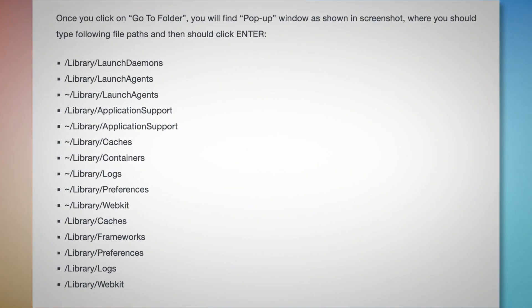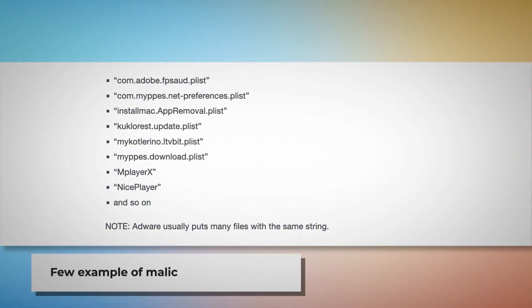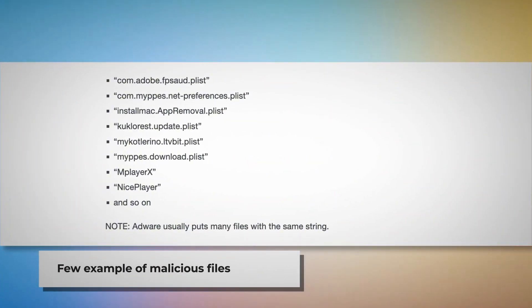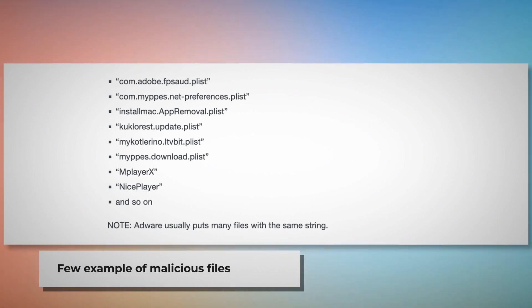Once you click Go to Folder, a pop-up window will appear where you should type these file paths and then press Enter. Type paths such as /Library/LaunchDaemons, /Library/LaunchAgents, /Library/Application Support, and so on, as shown here. You should look for suspicious or malicious files and move them to Trash. A few examples of such malicious files are shown here. Note that adware usually puts many files with the same string.